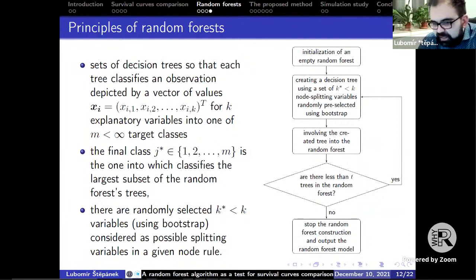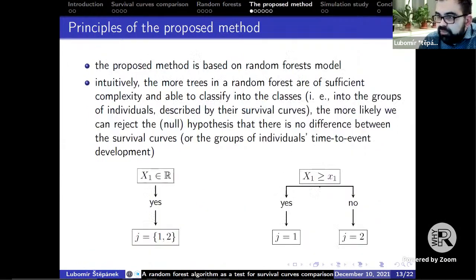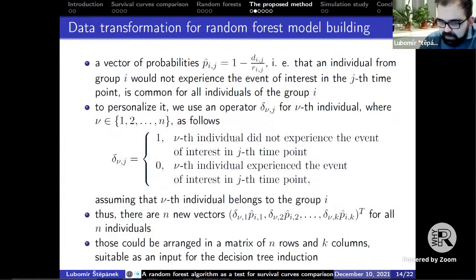Once you generate classification trees as described before, construction of a random forest is relatively easy. Random forests are finite sets of decision trees so that each tree classifies an observation depicted by a vector of values of k explanatory variables into one of the target classes. The final classification in the class is done using a voting scheme. The final class is one with the largest subset of the forest's trees that classifies into it. To ensure that the splitting variables are uncorrelated, a reduced number of variables is pre-selected by some bootstrapping.